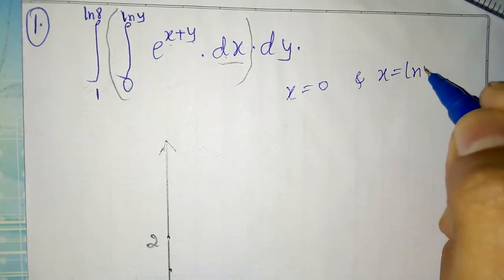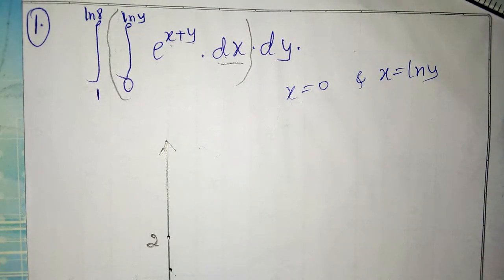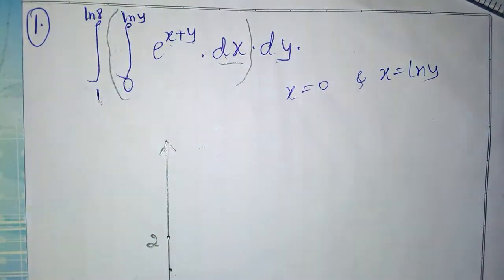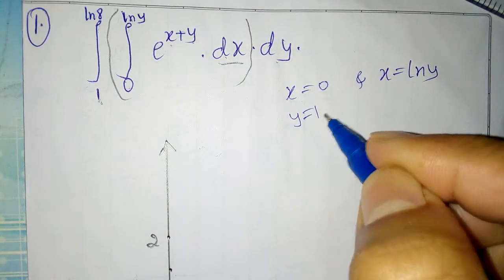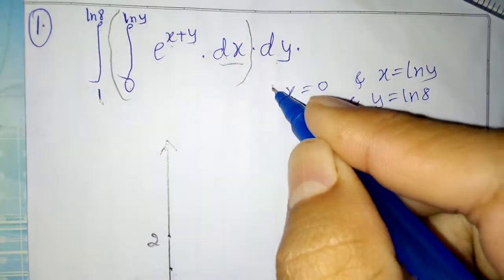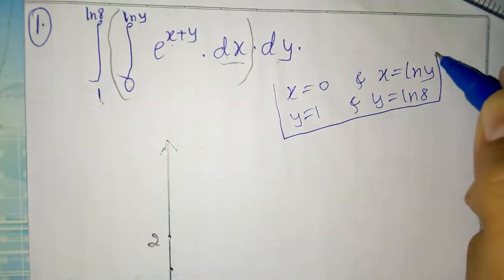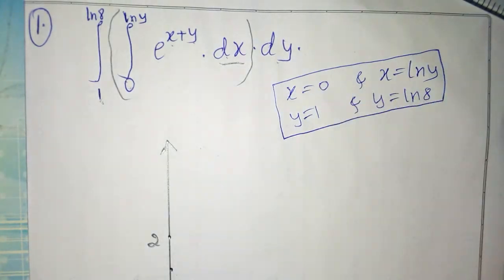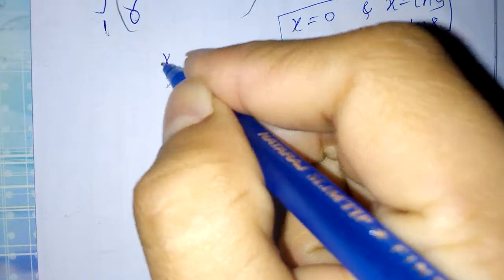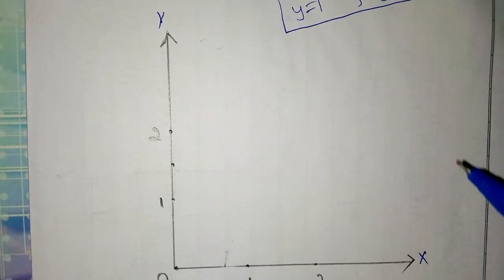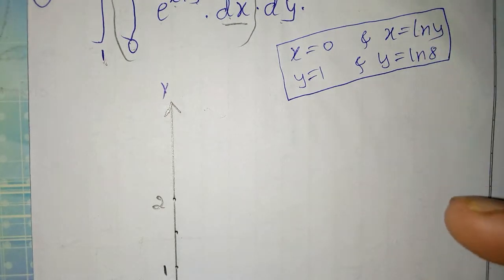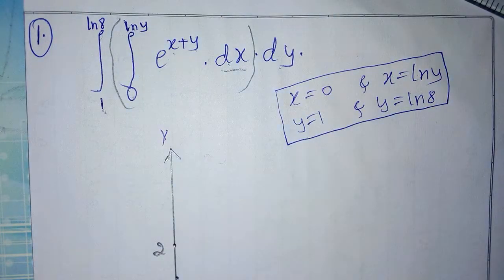Similarly, after that they give dy, so these are y limits: y is equal to 1 and y is equal to ln(8). We have to find these four equations and plot lines on the graph in the x-y plane. Then we get the region that this double integral requires.